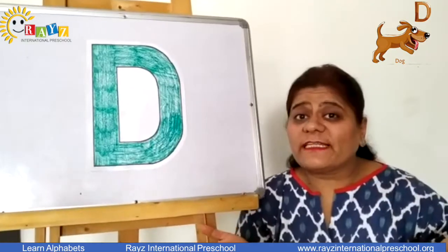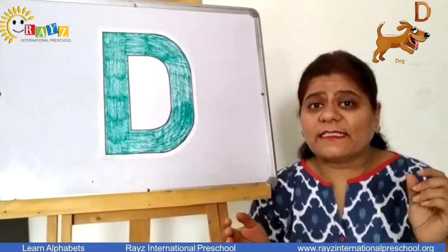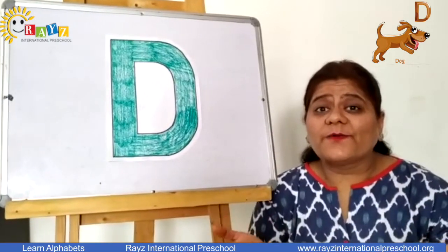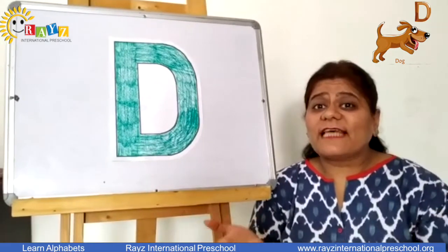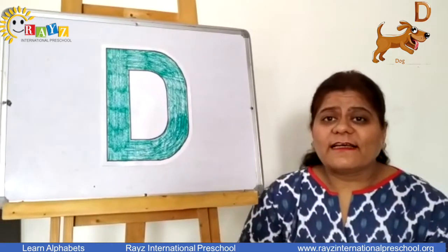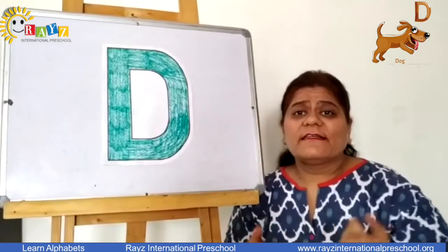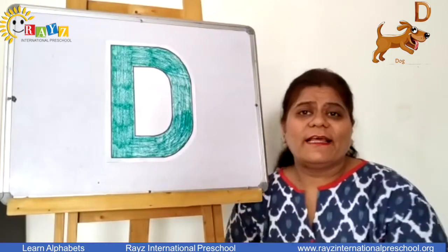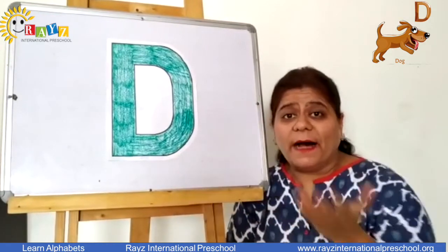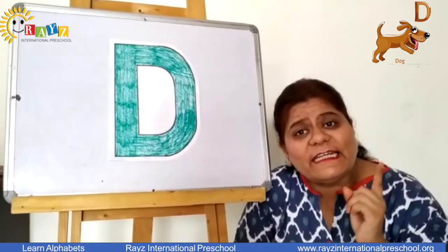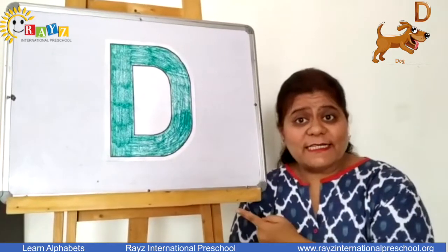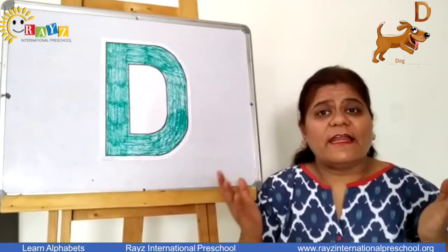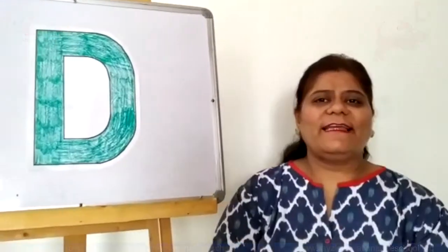So which letter did we learn today? Should we sing a small song for it? D, D, D sounds D. D, D, D sounds D. D, D, D for dog. D, D, D for doll. So today we learned about letter D. I hope you all learned and enjoyed listening to it. So take care, love you all and bye bye, bye bye.